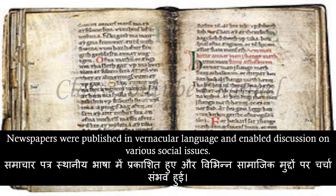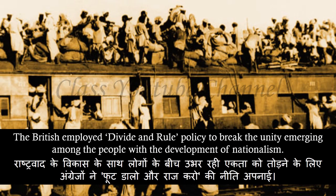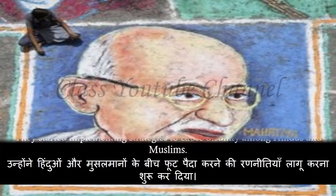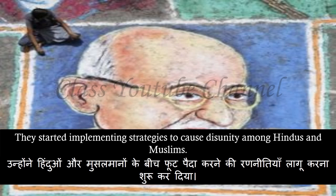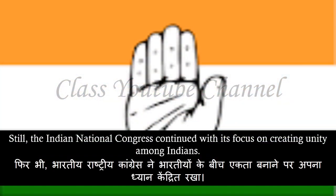Newspapers published in vernacular languages enabled discussion on various social issues, and as a result, various political issues reached the people. The British employed a divide-and-rule policy to break the unity emerging among the people with the development of nationalism. They started implementing strategies to cause disunity among Hindus and Muslims. Still, the Indian National Congress continued with its focus on creating unity among Indians.